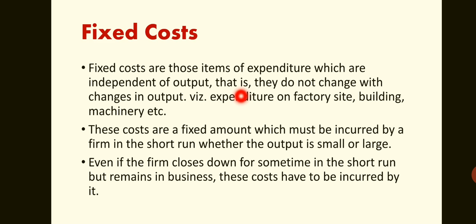For example, expenditure on a factory — suppose a factory costs 50 lakh rupees. Whether you are manufacturing 20,000 units or 30,000 units, the factory cost remains fixed. These costs are fixed amounts which must be incurred by a firm in the short run whether the output is small or large. Even if the firm closes down for some time in the short run but remains in business, these costs have to be incurred.